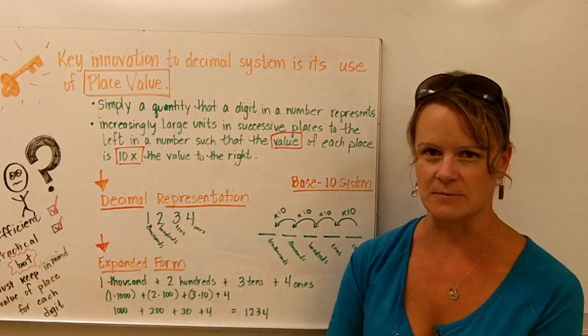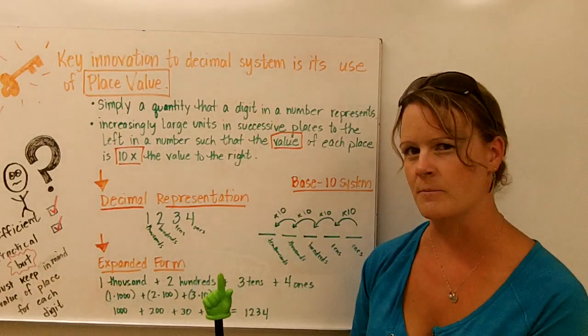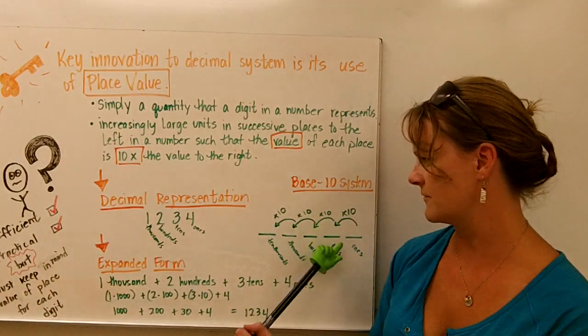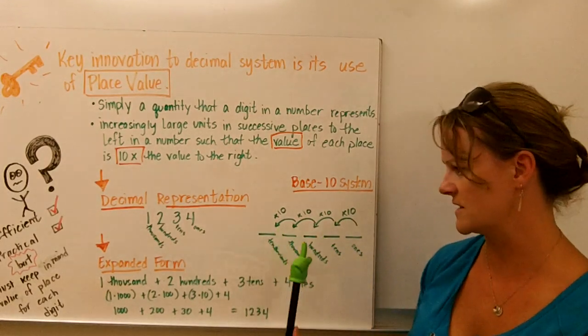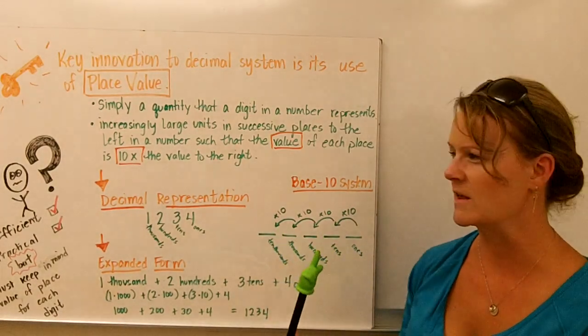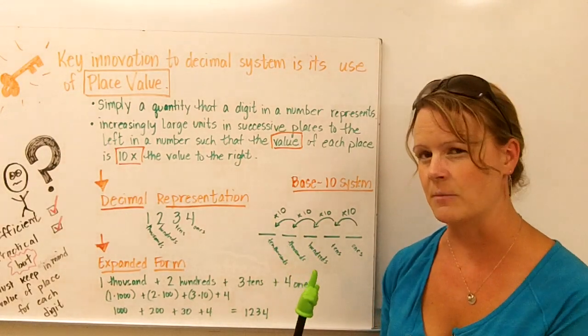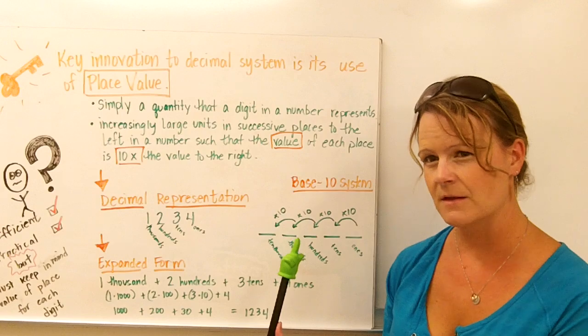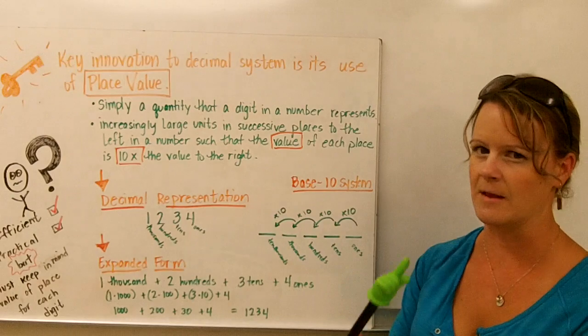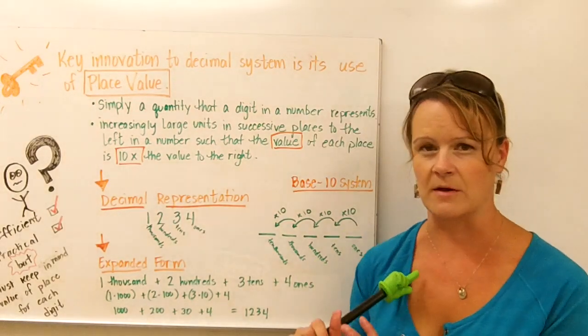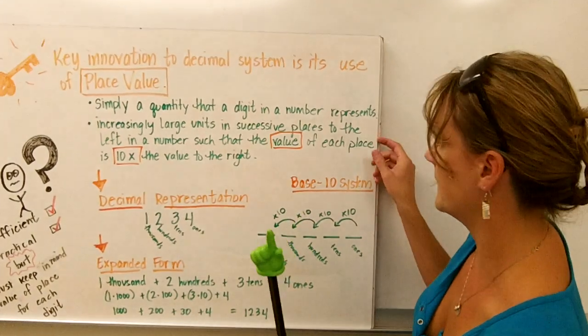But again, misconceptions are possible confusion. Students must keep in mind, and we all must keep in mind, that the value of the place for every digit determines the value of the number. So a lot of times students get confused. If you were to give students a particular number, say 23, and ask them what the two represents, they may not remember that the two in that case represents two groups of tens, and they may be confused about its place value. So keep that in mind.